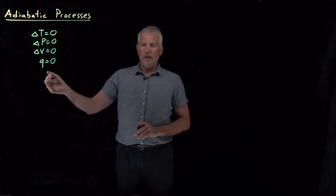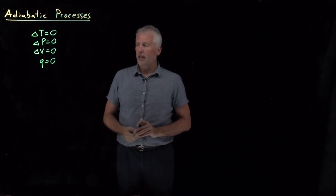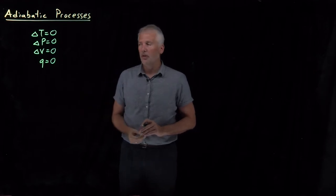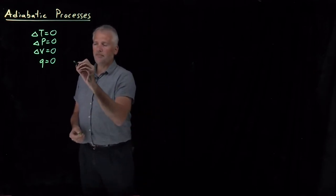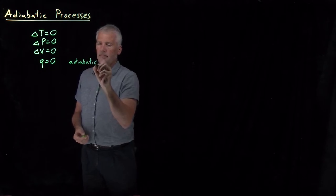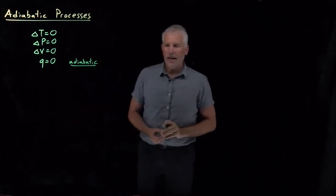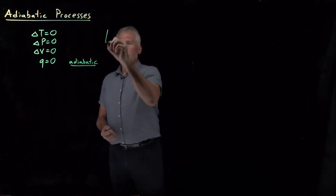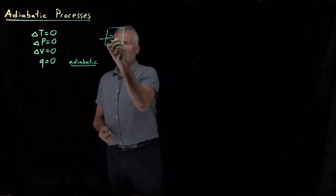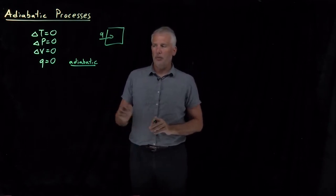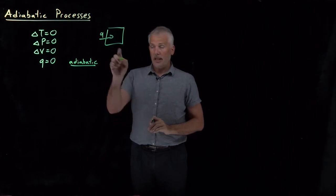The Q is the amount of heat flowing into or out of the system, depending on the sign. So if there's no heat flow into or out of the system, then Q is equal to zero, and we call that process adiabatic. So an adiabatic process is one where we don't allow heat to enter the system. If we have a system where heat is flowing in, or perhaps in a different system heat is flowing out, that would be not adiabatic.